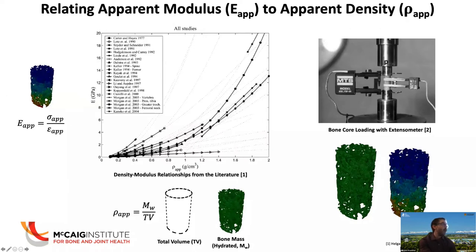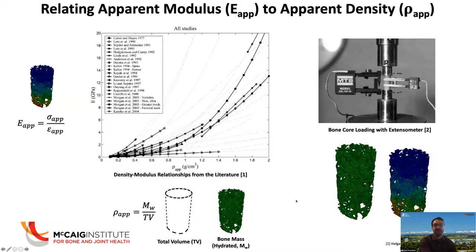On the y-axis we have apparent modulus, and on the x-axis we have apparent density. This review article from more than 10 years ago shows that historically, most of the equations used in the literature have a lot of variation. There has been a lot of research in the past 10 years looking at these density-modulus relationships and their effect on the accuracy of different finite element models. Historically, these would be experimentally measured rather than using a computational micro finite element model.